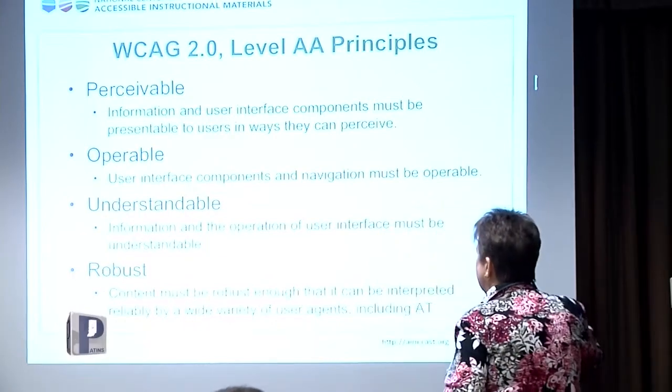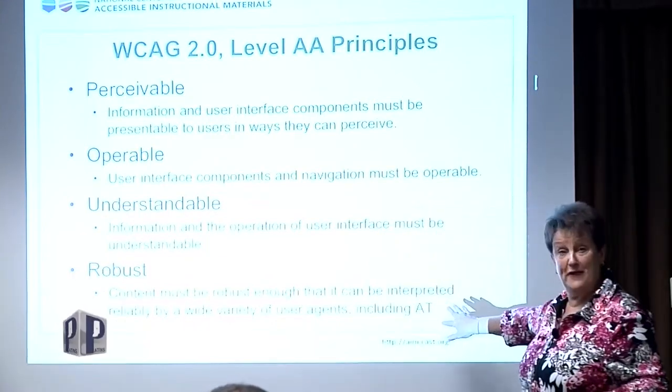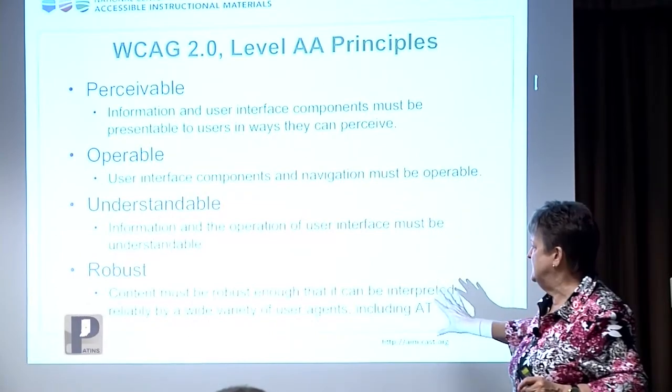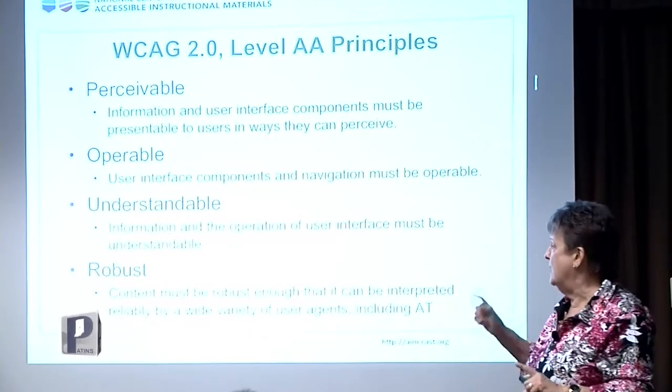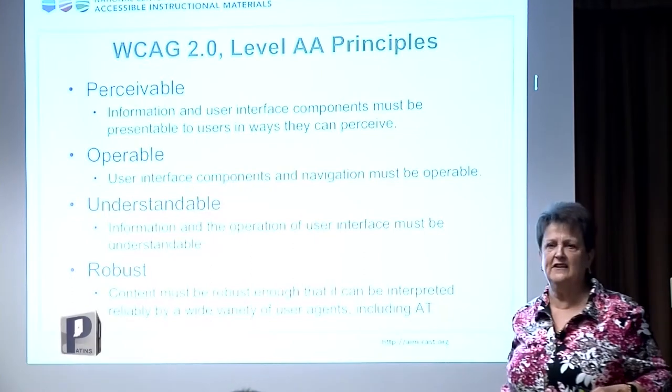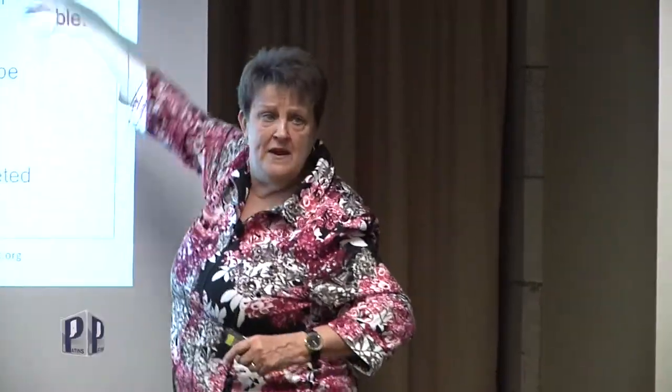The piece I don't like very much is 'robust.' To me it should all be robust. What they're calling robust is that it has to be interpreted reliably by a wide variety of user agents, including assistive technology. It can't just be its own thing — it needs to work with everything. This is like saying 'oh and by the way, it needs to be accessible,' even though this whole thing is about accessibility. If something is WCAG 2.0 compliant, the whole system is robust.